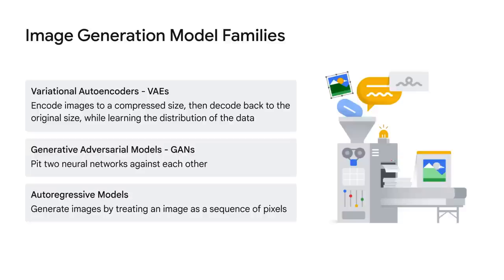These models are really interesting — they actually pit two neural networks against each other. One neural network, the generator, creates images, and the other neural network, the discriminator, predicts if the image is real or fake. Over time, the discriminator gets better and better at distinguishing between real and fake, and the generator gets better and better at creating real-looking fakes. You may have heard the term deepfakes before.